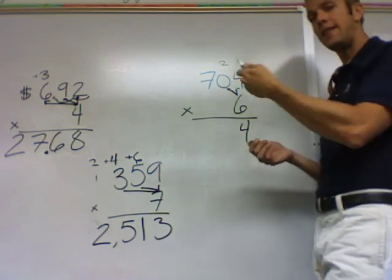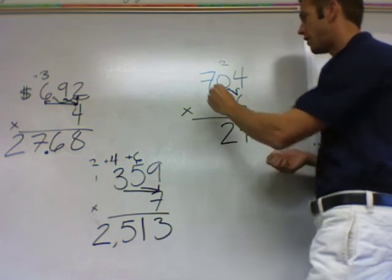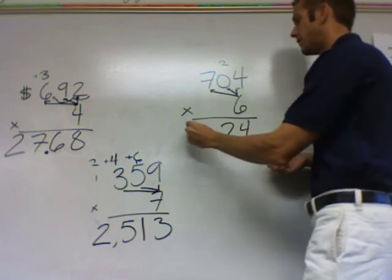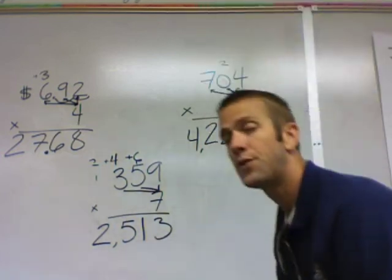But then don't forget to add the 2. So 0 plus 2 is 2. Just a 2 will come down. 7 times 6 is 42. 4,224.